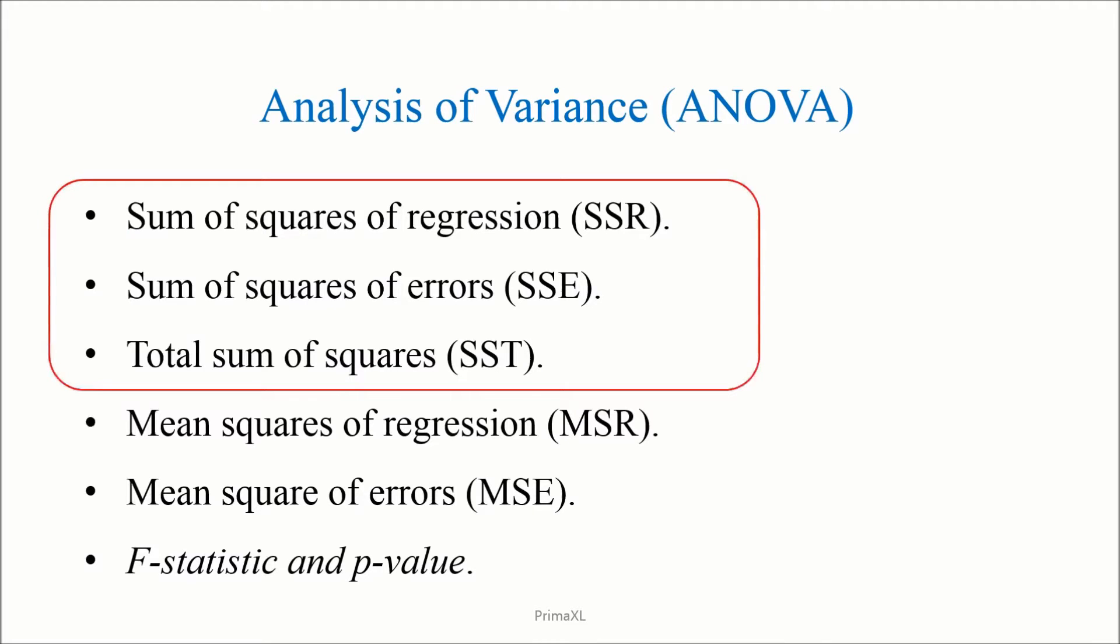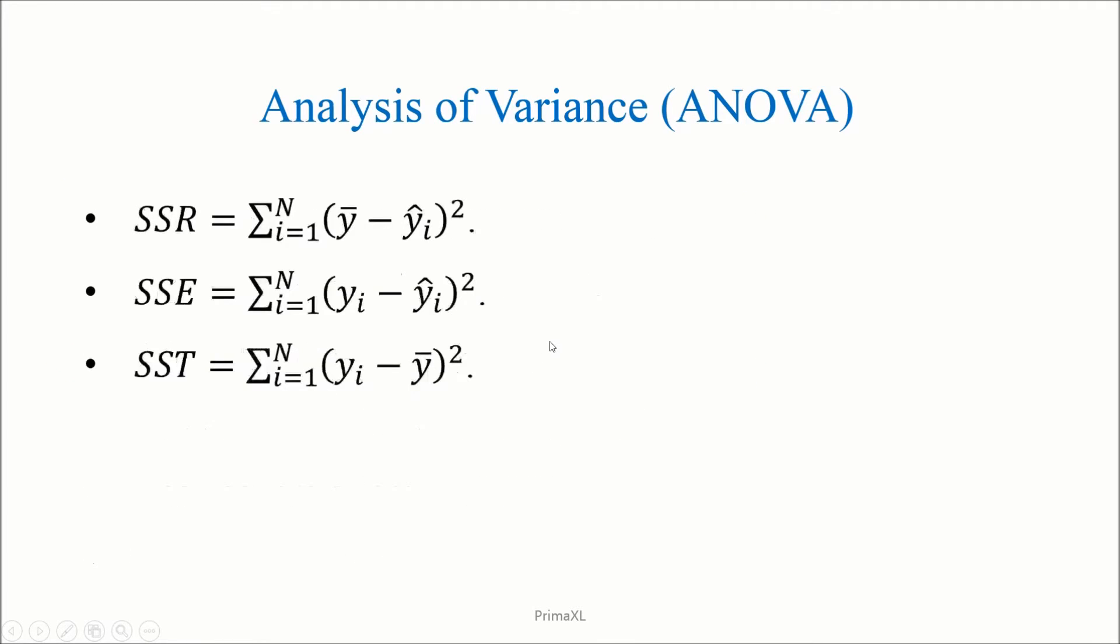Let's look closely into these three quantities: the sum of squares. The sum of squares of regression, SSR, the sum of squares of errors, SSE, and the total sum of squares, SST. The formulas for the SSR, SSE, and SST are given here.